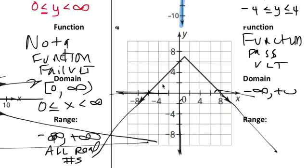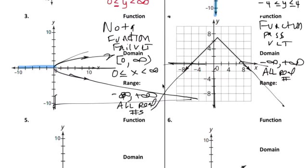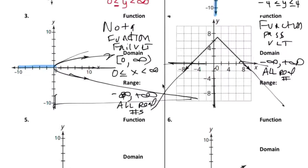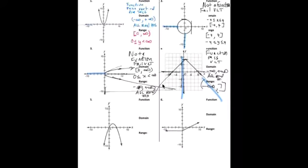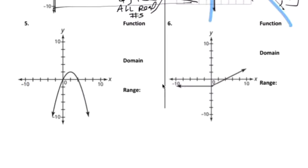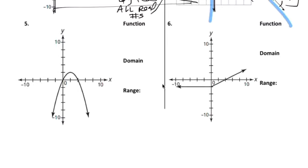All real numbers. Range, you go from negative infinity to seven there. I'll leave you to do that one. This is a function because it passed the vertical line test.